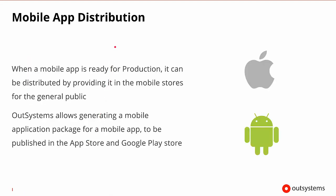Mobile app distribution is when a mobile app is ready for production and it can be placed on the stores for the general public to consume. OutSystems allows for generating a mobile application package for the app that can be published to the App Store or the Google Play Store.